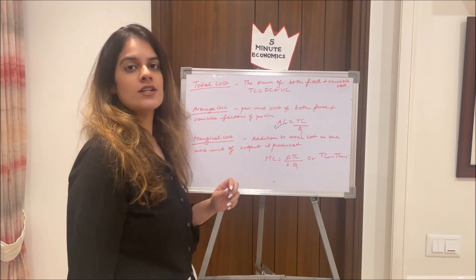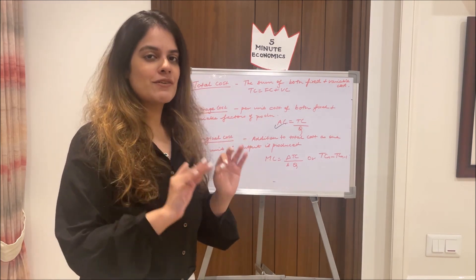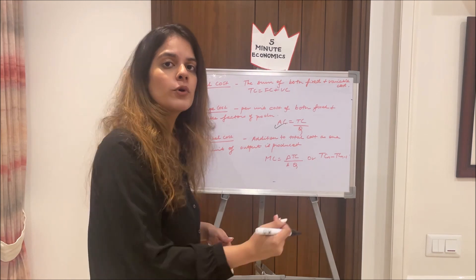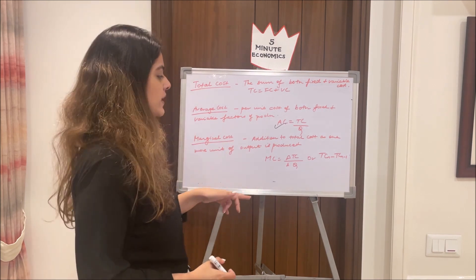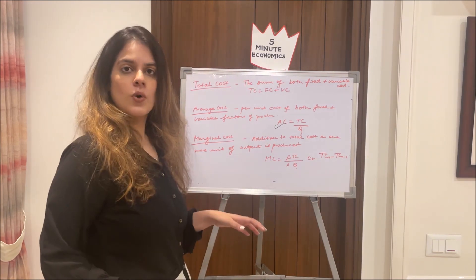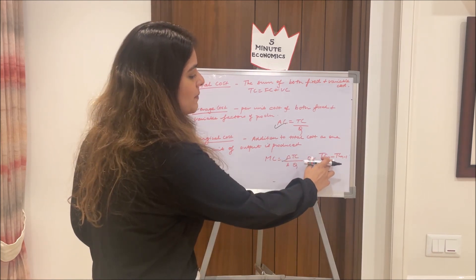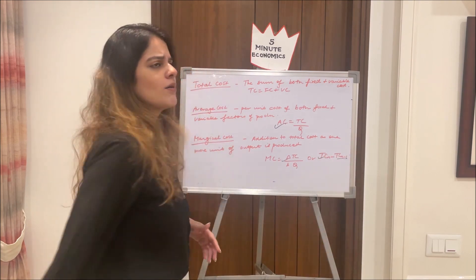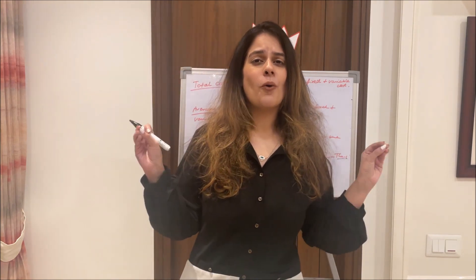Lastly, marginal cost — in economics, 'marginal' always means additional. Marginal cost is the addition to total cost as one more unit of output is produced. There are two formulas to calculate it: first, MC = ΔTC / ΔQ, where delta means change — change in total cost divided by change in total quantity; second, MC = TC(n) − TC(n−1), where n−1 means the previous unit. These are the two formulas most commonly used to calculate marginal cost.